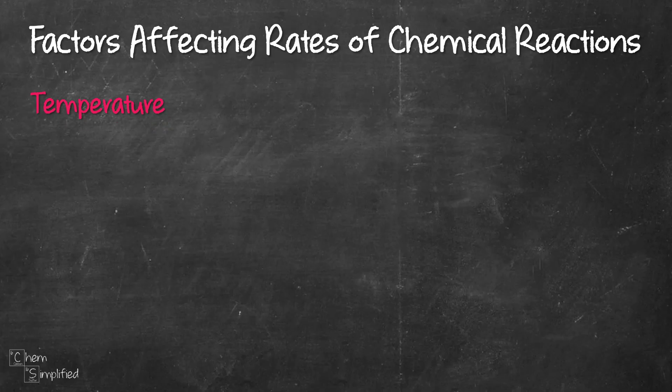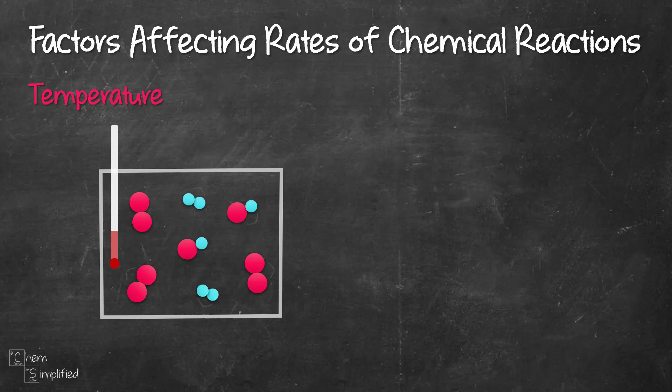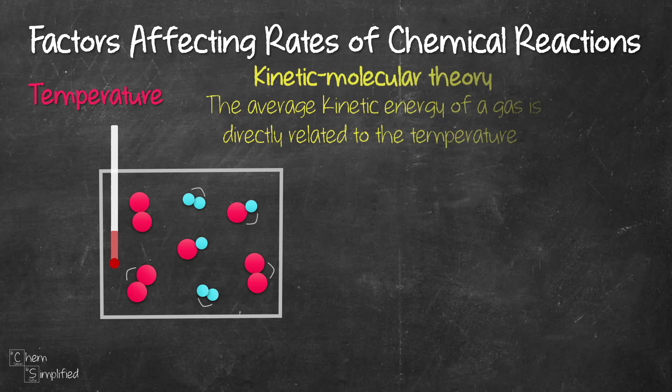On to our third factor, which is temperature. Let's say we have a system at a relatively low temperature. Since the temperature is low, the average kinetic energy of the particles is low. This can be explained using the kinetic molecular theory, whereby the temperature of a substance is related to the average kinetic energy of the particles of that substance.